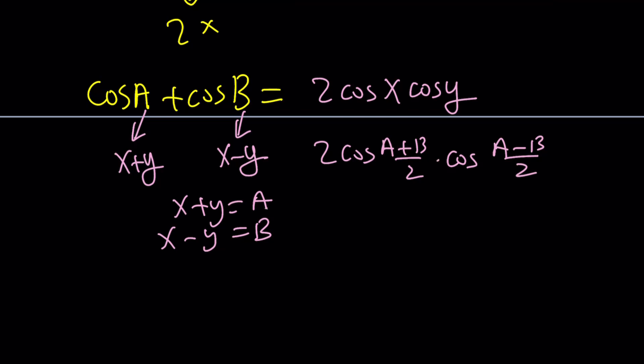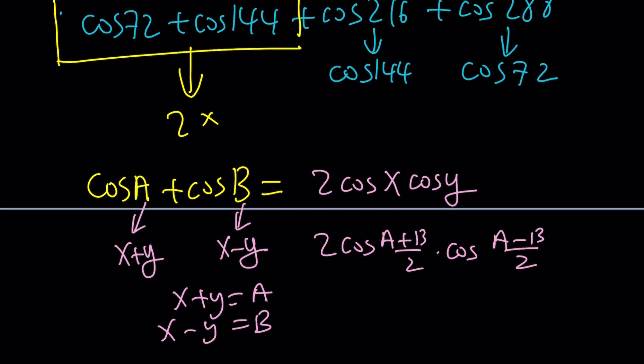And now we have this identity. If you plug in 144 and 72, by the way, the difference doesn't matter because cosine is even. And you can just go ahead and plug in. What is the average of 72 and 144? If you add them up, you get 216 and half of that would be 108. So you're still going to be getting something like cos 108 from here. And their difference is 72, divide by 2, you get cos 36.